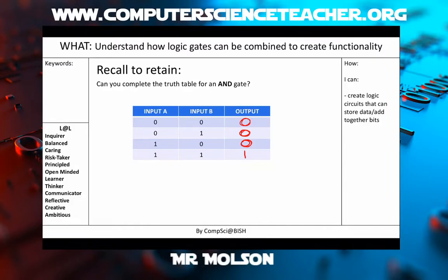We'll just have another go. This time we've got the truth table for an OR gate. I want you to pause the video when I say go and see if you can complete the truth table for an OR gate. Go. An OR gate is a little bit different from an AND gate. It's similar in that if both inputs are off, like on the top line, then our output is off.